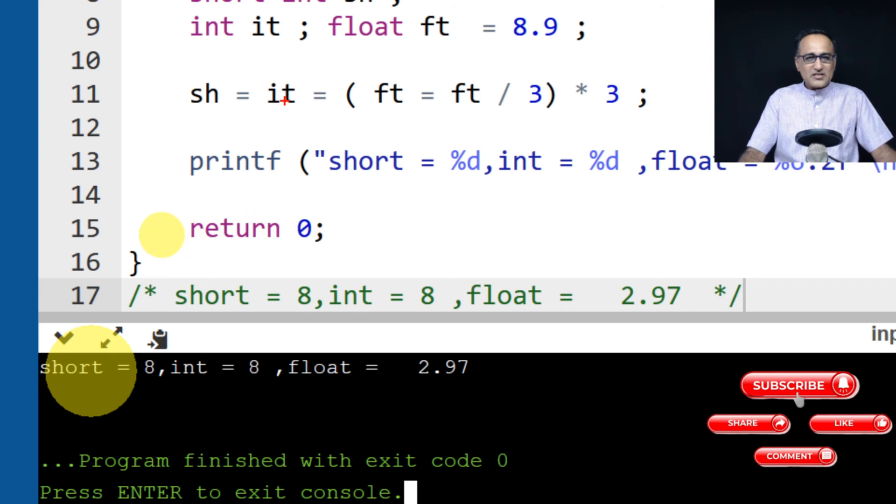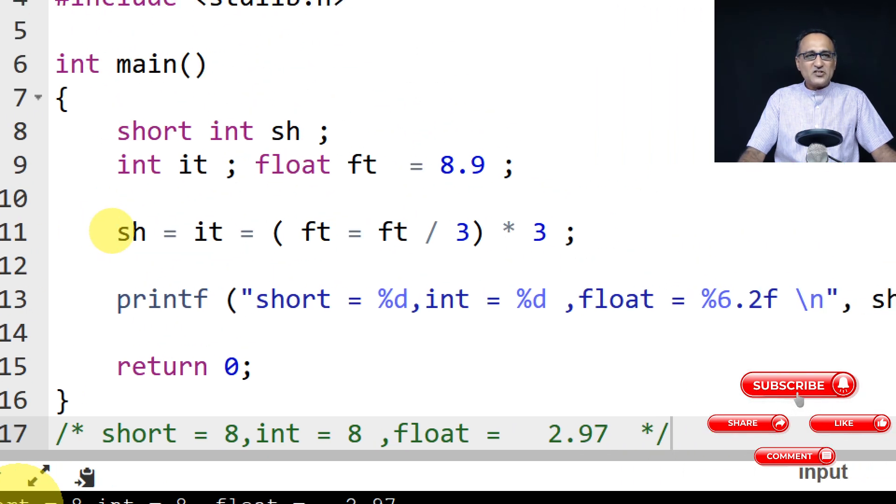8.9 when it got assigned to integer only remains as 8. Then sh also remains as 8. That's why if you see here, the value of short, int, and float are displayed as per expectations. So I hope it made sense to you.